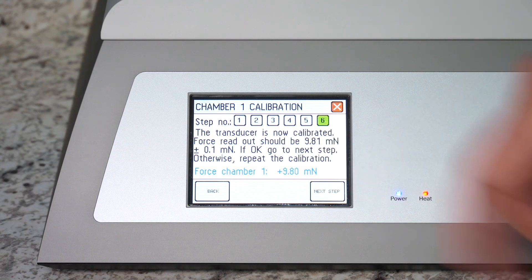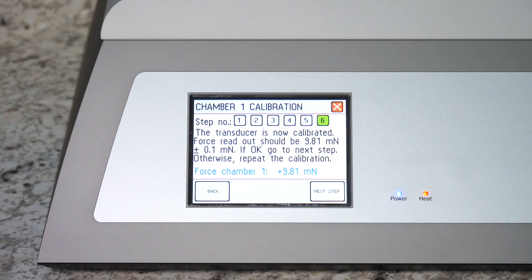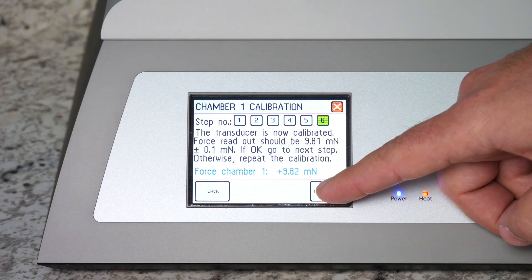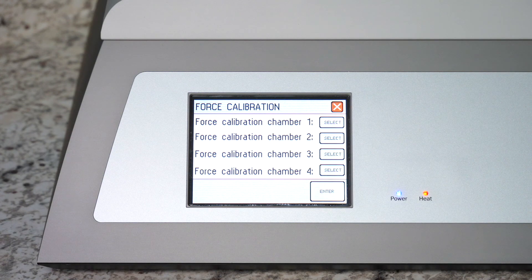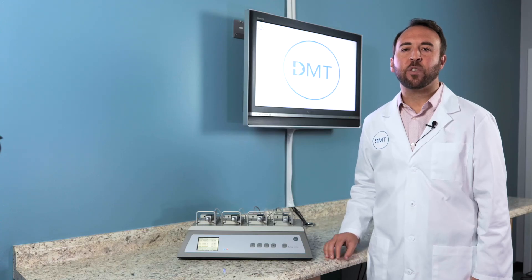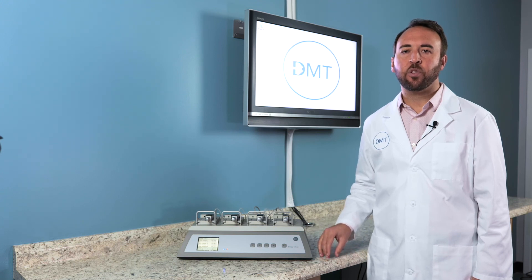The reading should be right around 9.81. If that's the case go ahead and hit next step to lock in the calibration. For more information please refer to the DMT 620M user manual or additional resource videos.